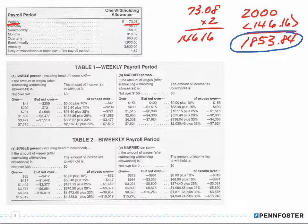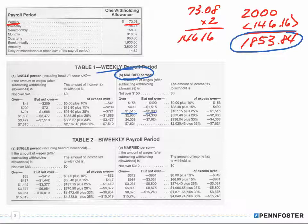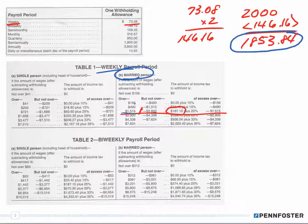That $1,853.84 is the amount we use to determine how much to withhold. It's a weekly payroll and she's married, so we look at the married column. It says over $1,515 but not over $2,900 — that's the line we're going to use. It indicates a base withholding of $187.15 on the base amount of $1,515.